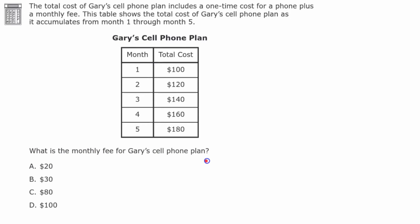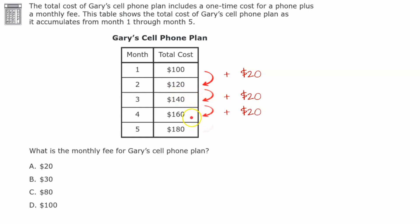Welcome back. We see that the cost is increasing each month. The cost went from $100 to $120, which is a $20 increase from month one to month two. Month two to month three was an additional $20, plus $20, plus $20. So for every month Gary's cell phone plan increases by $20 — he has a monthly fee of $20.